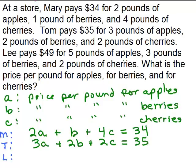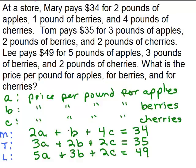Lee bought 5 pounds of apples, so for the apples he paid 5A. He bought 3 pounds of berries and 2 pounds of cherries, and he paid $49. So we were able to write 3 equations with these 3 unknowns A, B, and C.